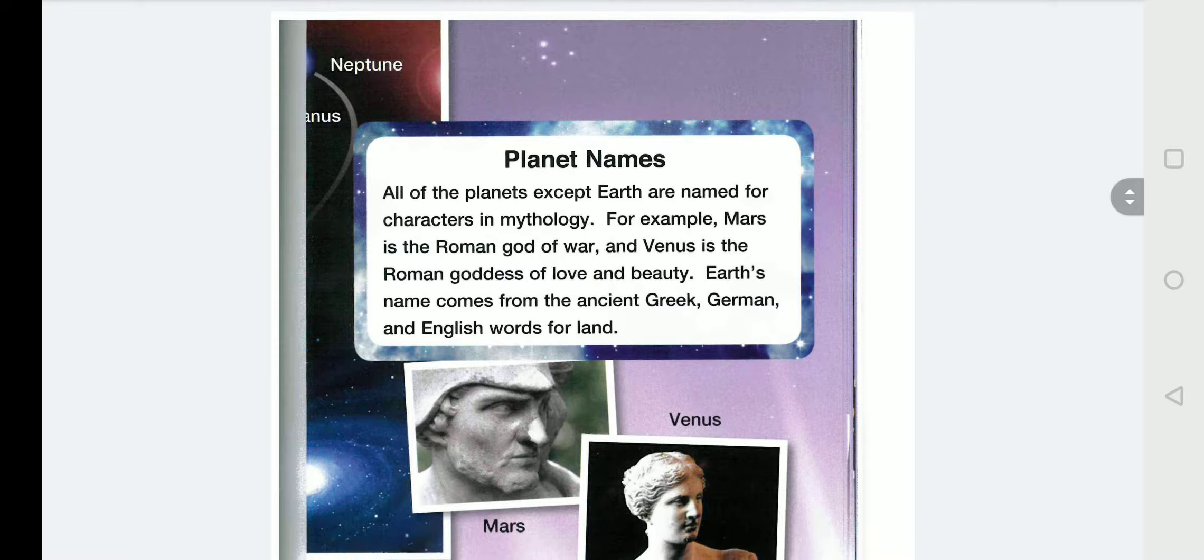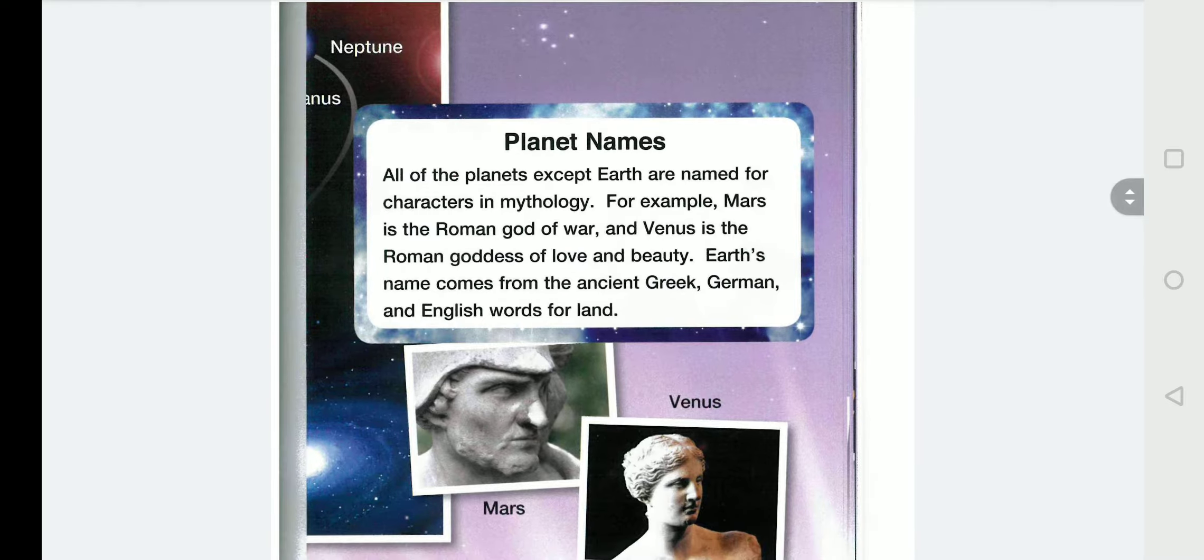Planet names. All of the planets except Earth are named for characters in mythology. For example, Mars is the Roman god of war. And Venus is the Roman goddess of love and beauty. Earth's name comes from the ancient Greek, German and English words for land.